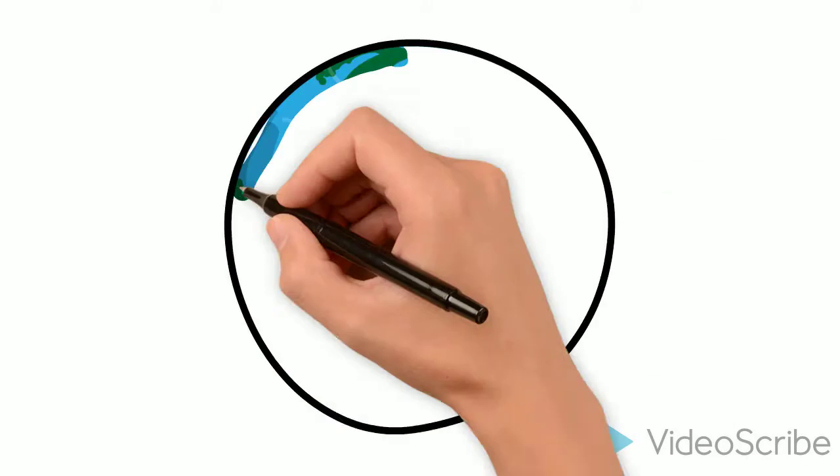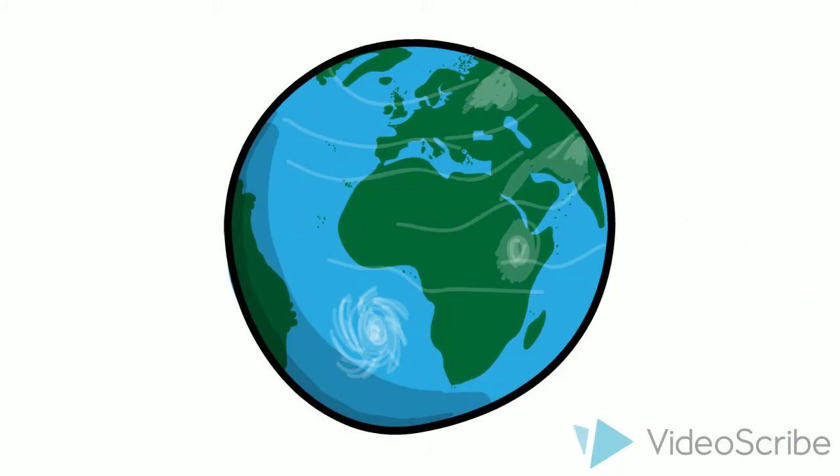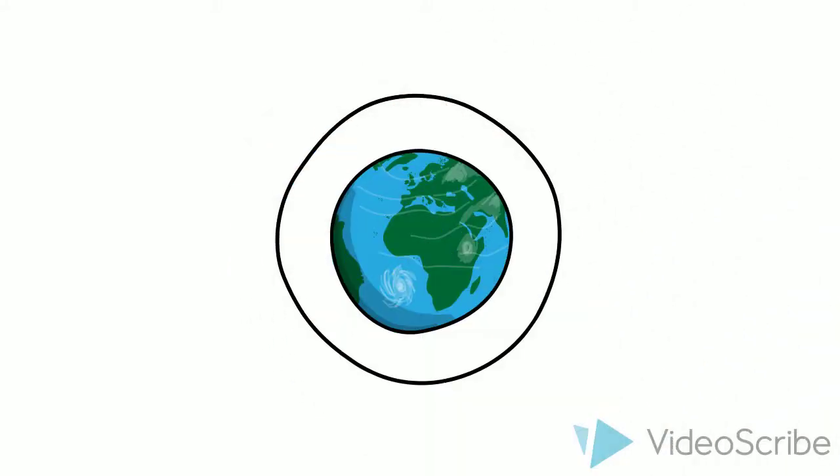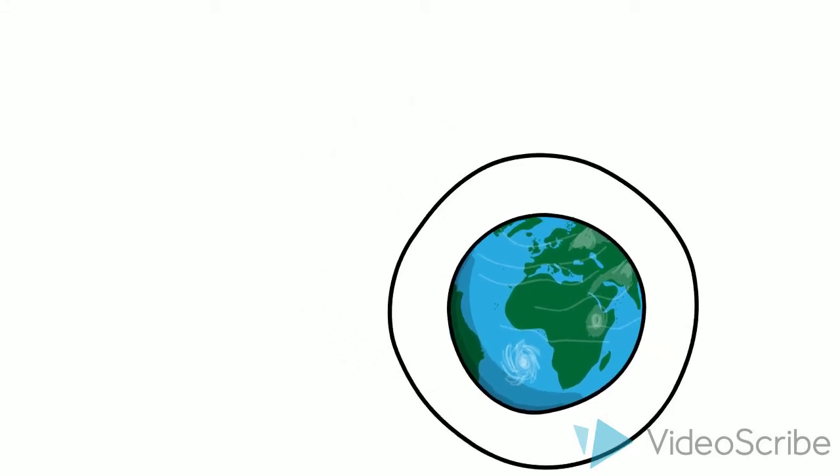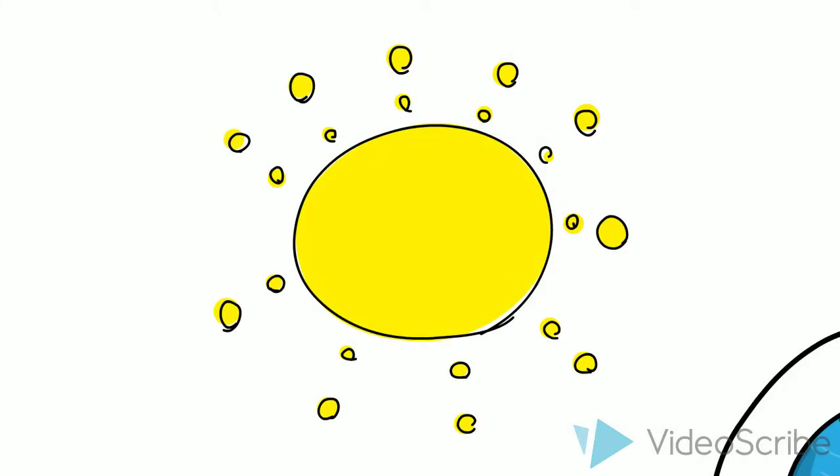Basically, Earth is insulated by a whole bunch of gases that surround our planet and form our atmosphere. These gases, called greenhouse gases, essentially let sunlight reach Earth but keep heat from leaving, so they keep us warm.